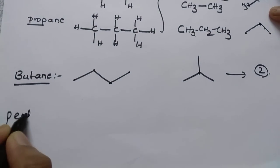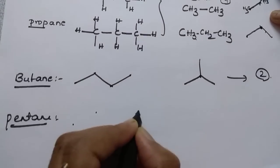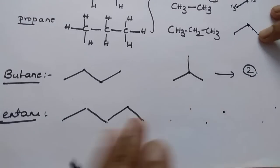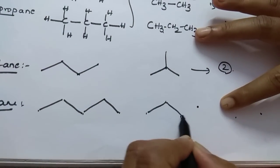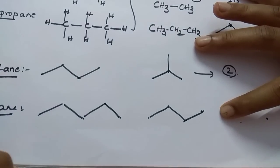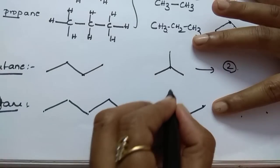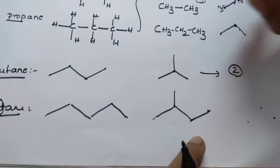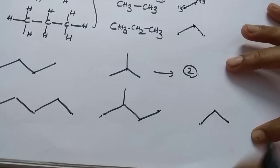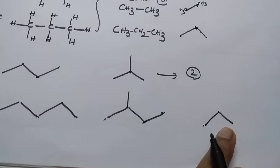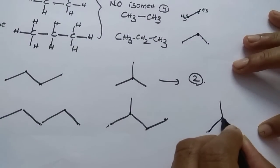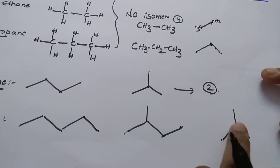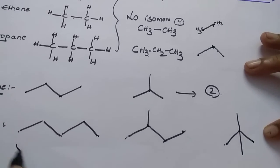Coming to pentane — five carbons. Put five dots and join them: first isomer. Next, take four dots as the parent chain and join them; the remaining one carbon is placed as a branch. With four carbons as the parent chain, only one additional isomer is possible. Next, take three carbons as the parent chain; total carbons must be five, so place the remaining two on the middle carbon. That gives a different isomer. Total isomers for pentane: three.